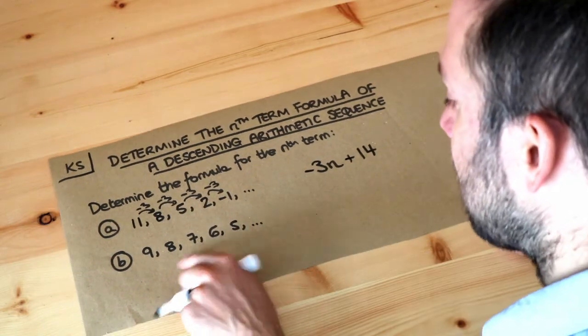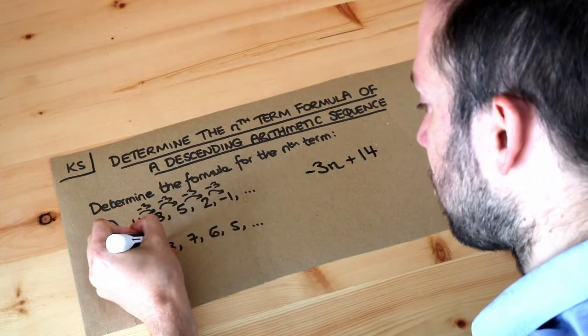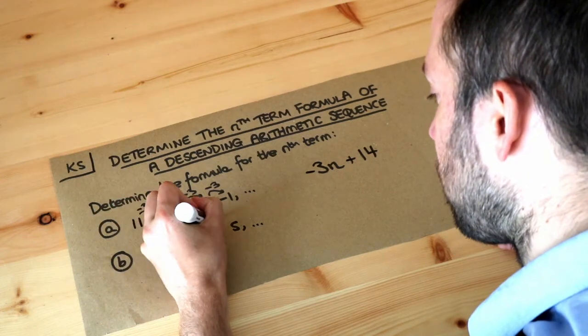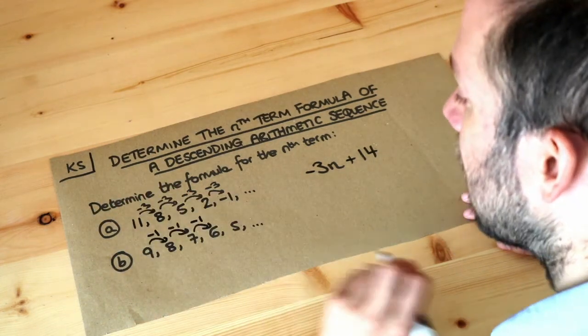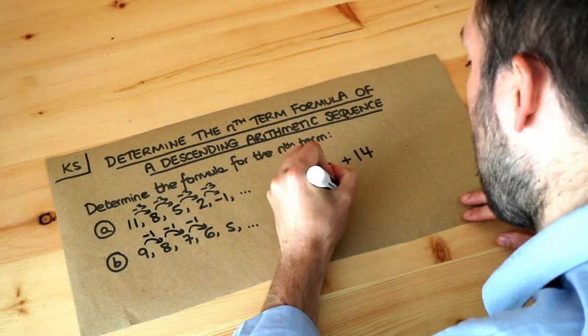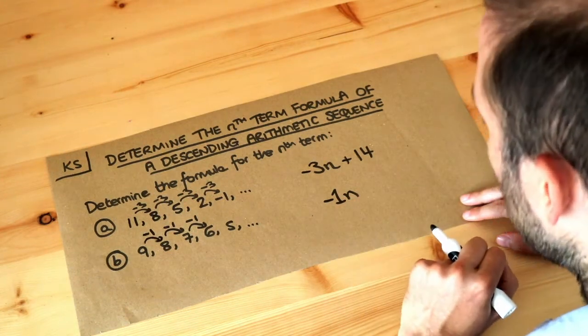What about the second example? Well again first step, always find the difference each time whether positive or negative. So we can see it's going down by one each time, the difference is minus 1, so our nth term formula starts with minus 1 n. We take that difference and put it on front of n to give you the first part of our formula.